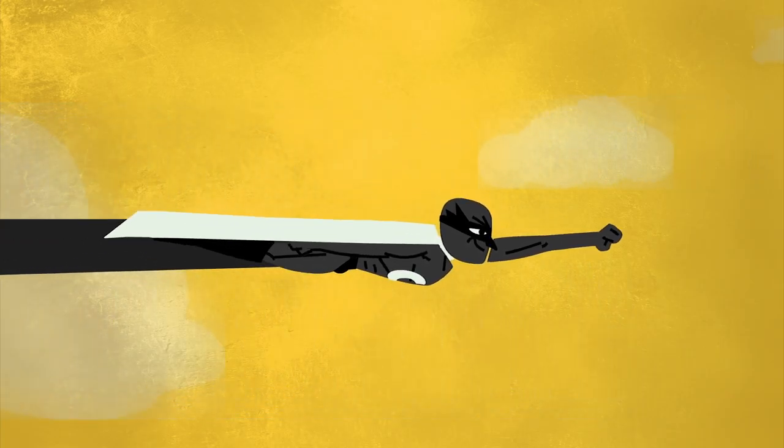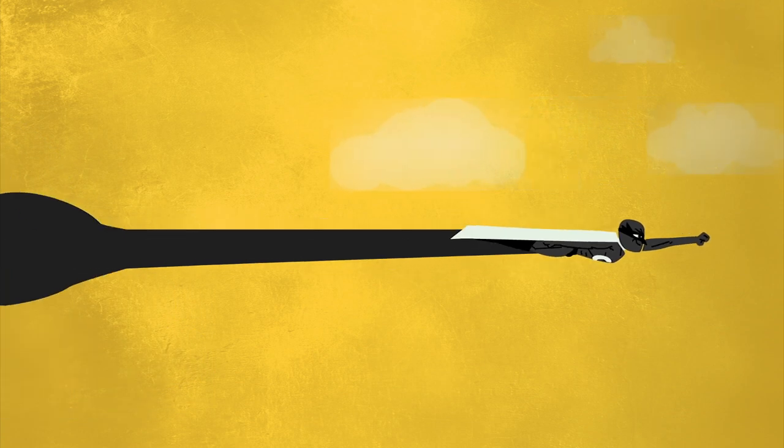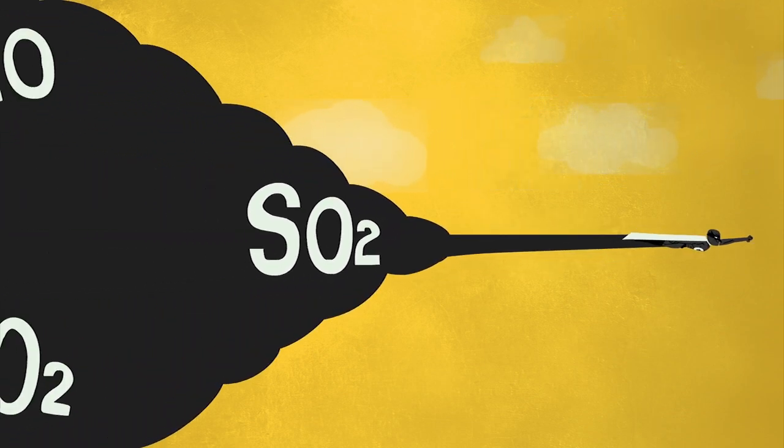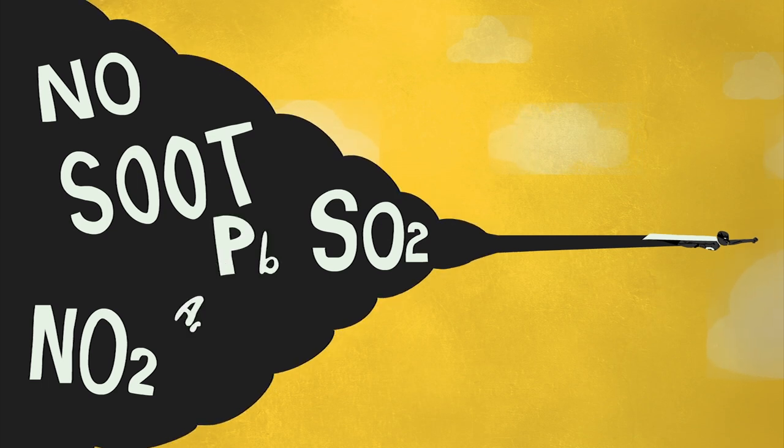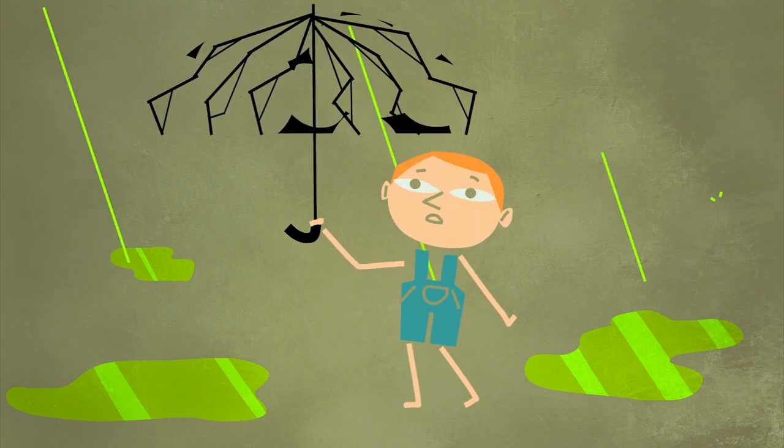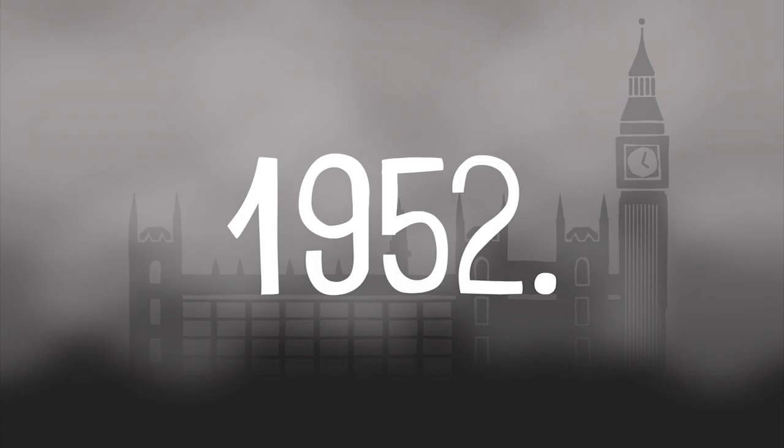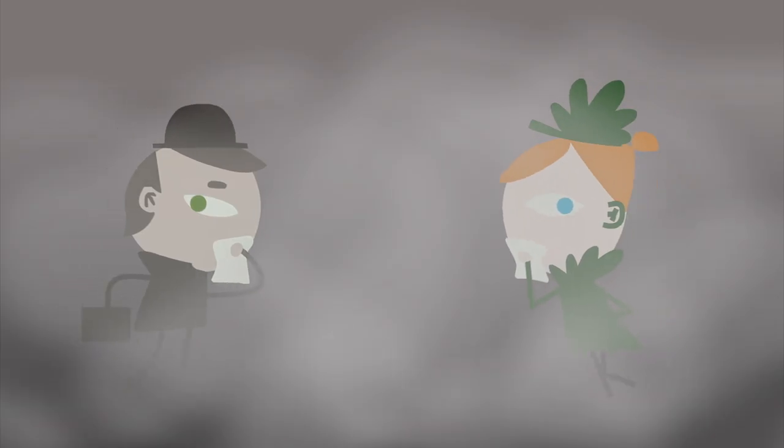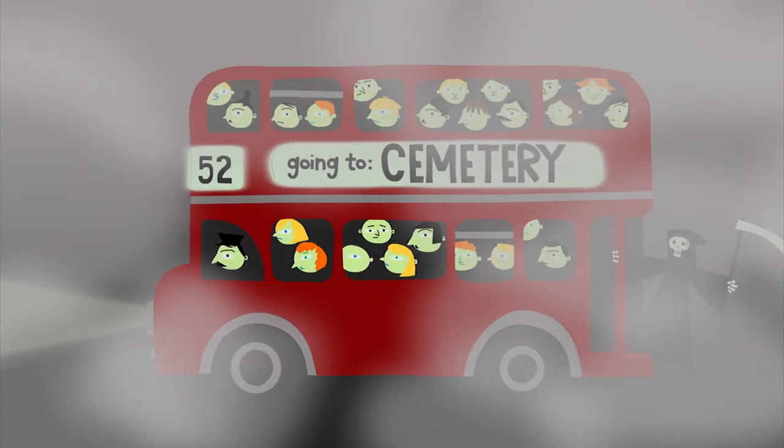But coal also releases pollutants into the air, like sulfur dioxide, nitrogen oxides, soot, and toxic metals like mercury. These cause environmental damage like acid rain and serious health problems. In fact, in 1952, coal burning caused such heavy smog in London that pedestrians couldn't even see their feet, and thousands of people died from ill health.